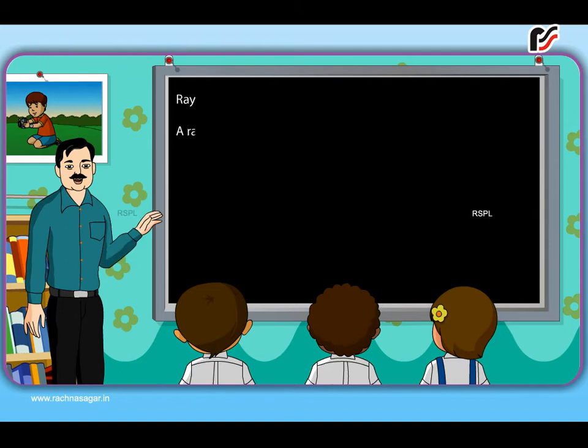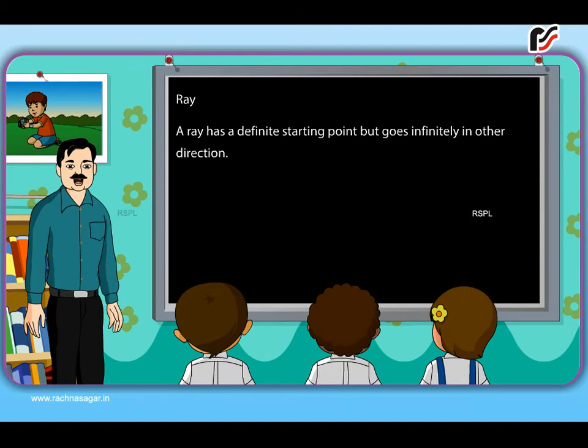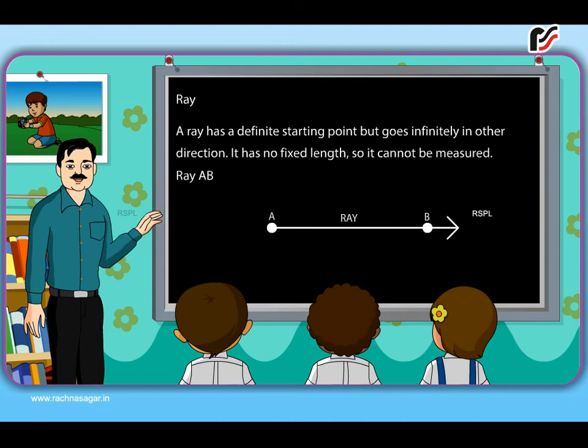Ray. A ray has a definite starting point but goes infinitely in other direction. It has no fixed length so it cannot be measured. Ray AB is represented as AB.